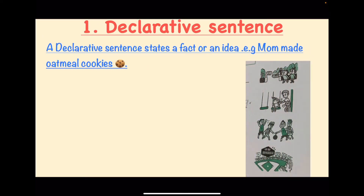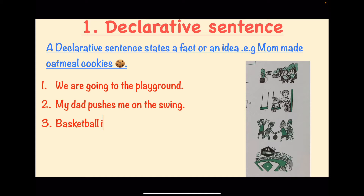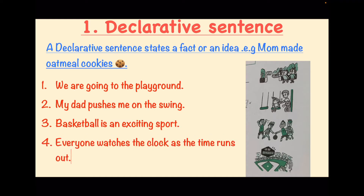A declarative sentence states a fact or an idea. Example: Mom made oatmeal cookies. 1. We're going to the playground. 2. My dad pushes me in the swing. 3. Basketball is an exciting sport. 4. Everyone watches the clock as the time runs out.